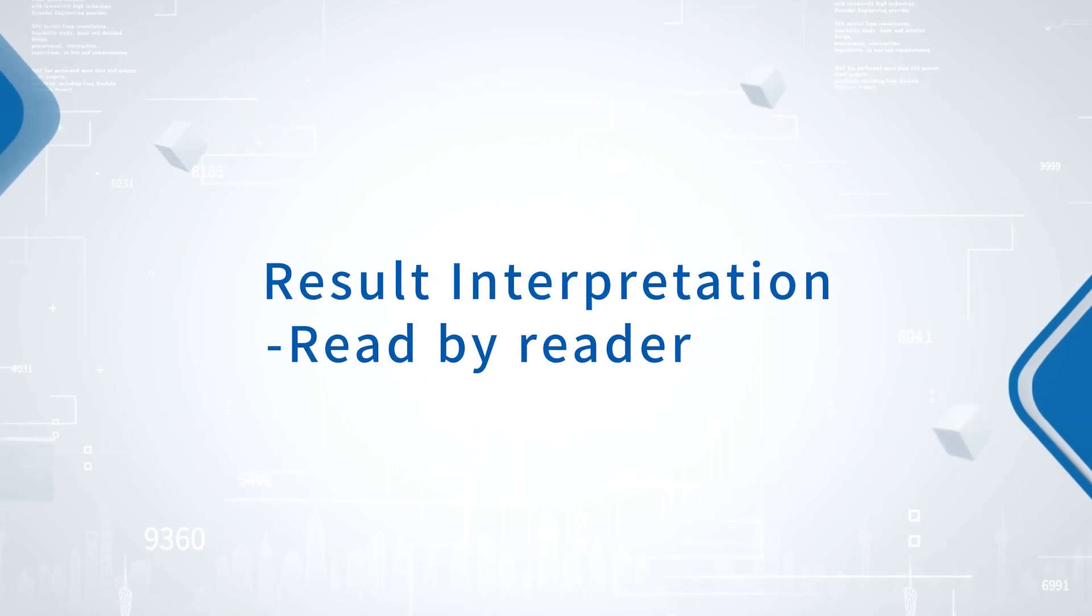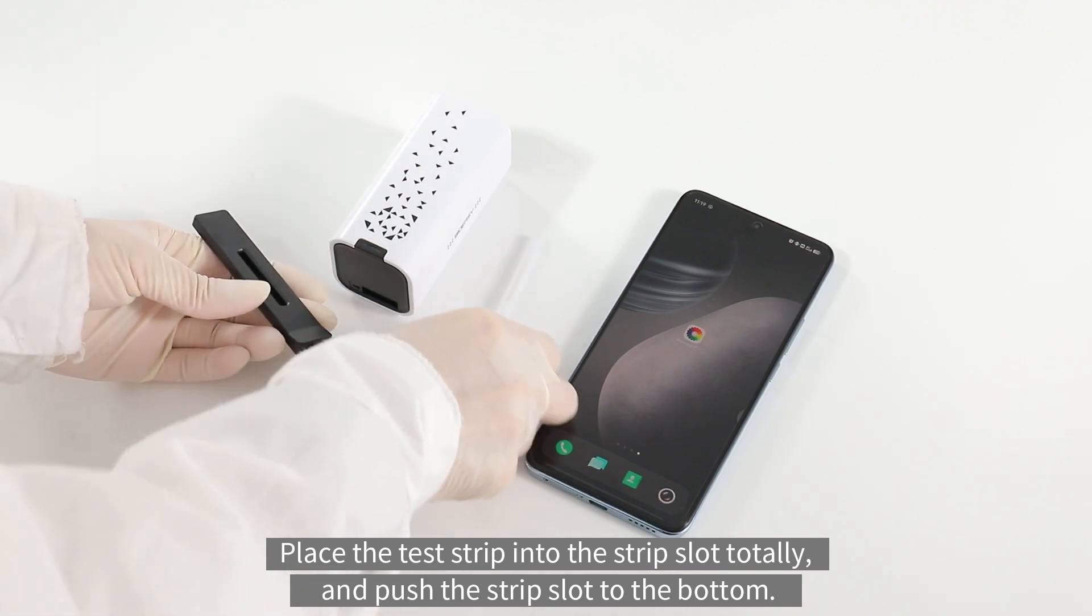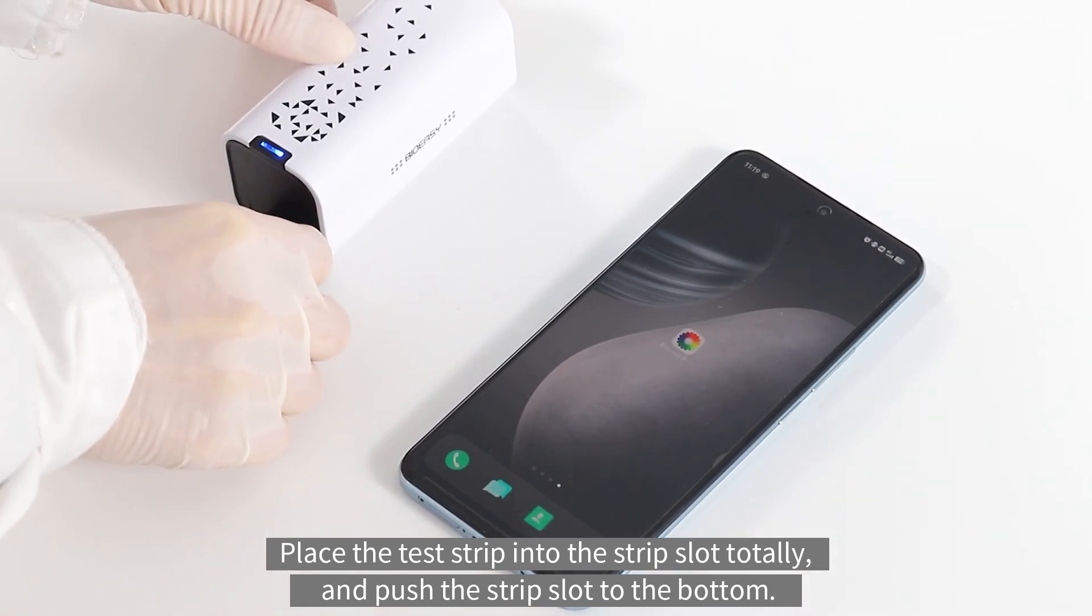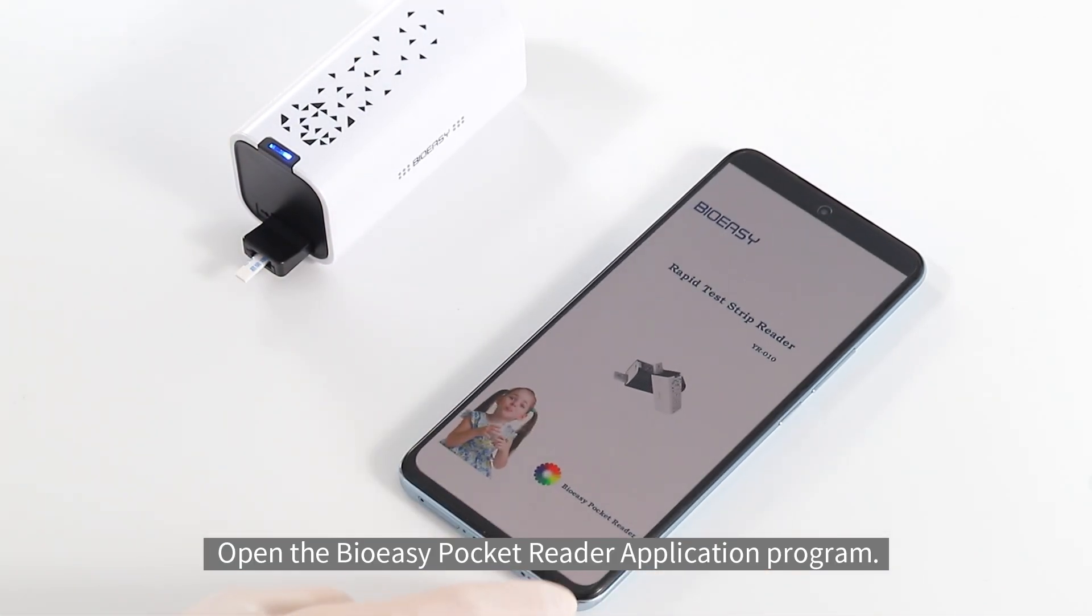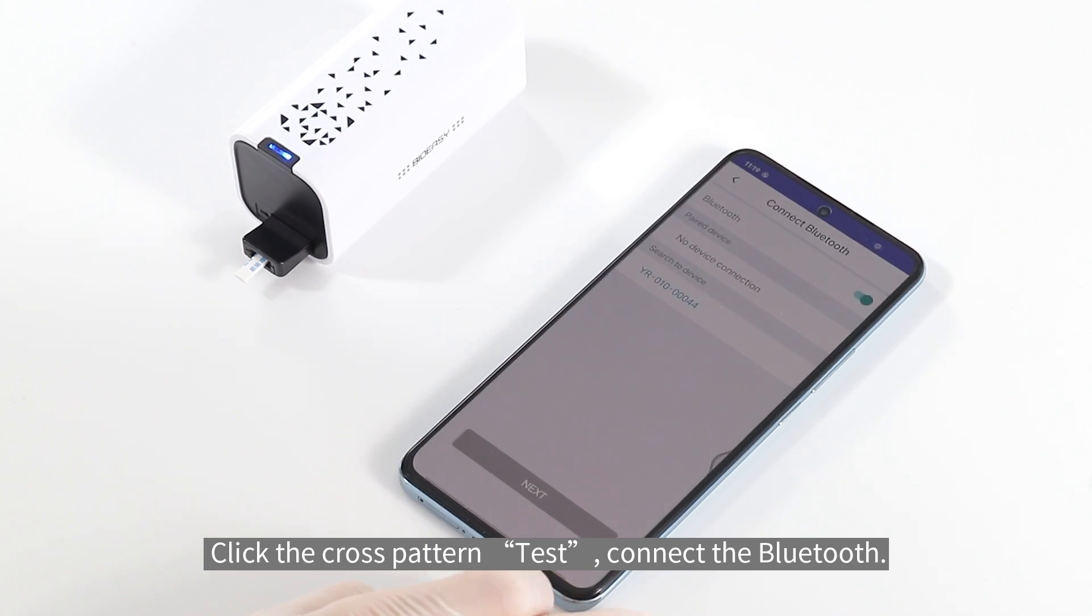Result Interpretation. Read by Reader. Place the test strip into the strip slot totally and push the strip slot to the bottom. Open the BioEasy Pocket Reader Application Program. Click the cross pattern test, connect the bluetooth.